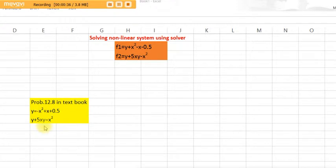How to solve them using Solver in Excel? You have to rearrange to make the functions. f1 becomes y plus x squared minus x minus 0.5, and f2, the second function, becomes y plus 5xy minus x squared.